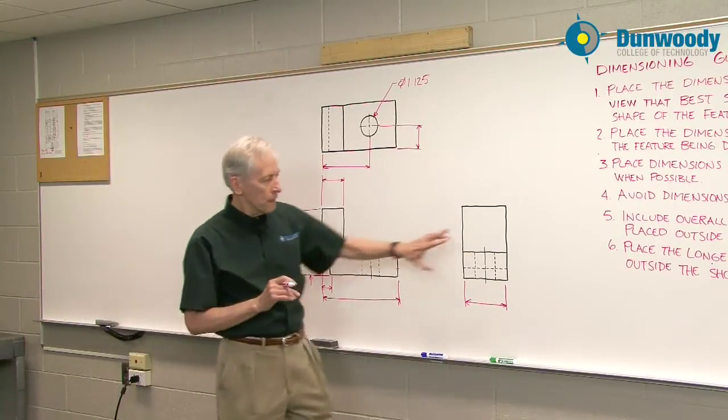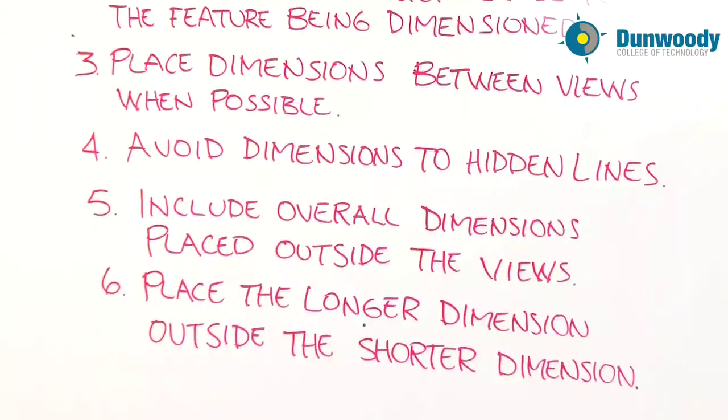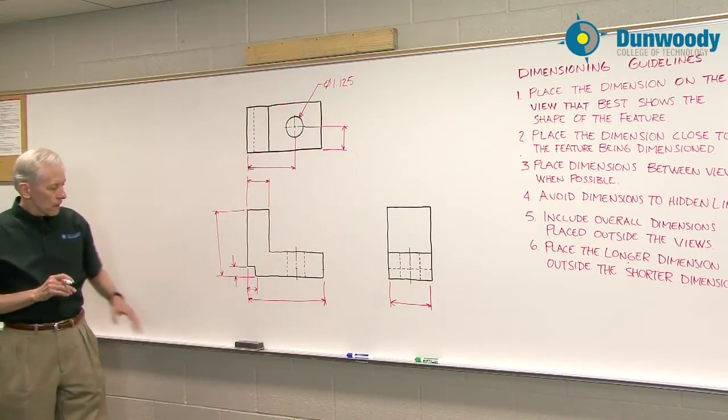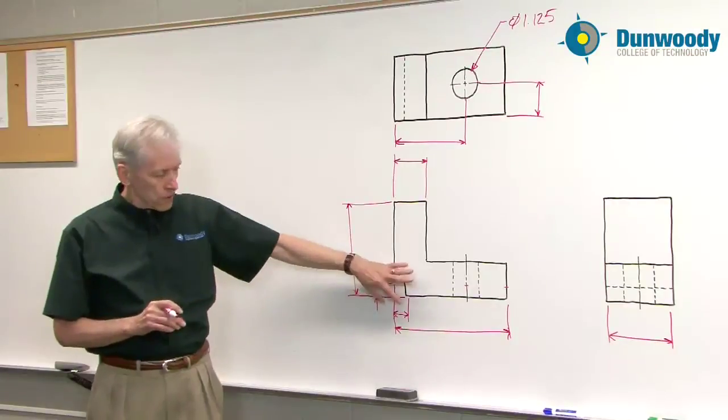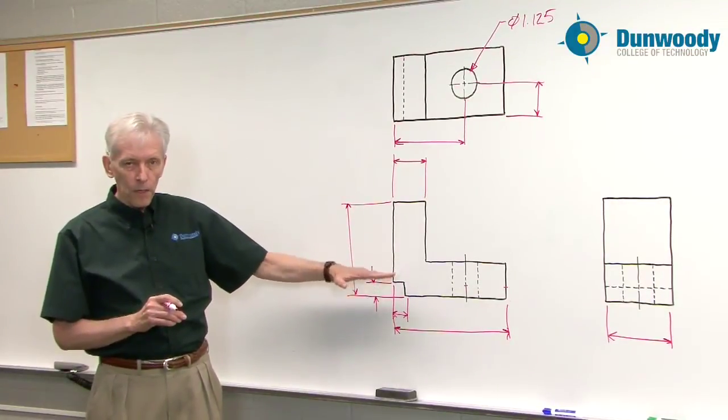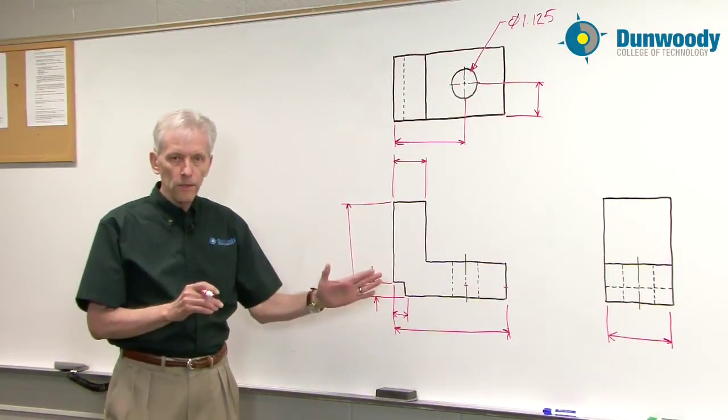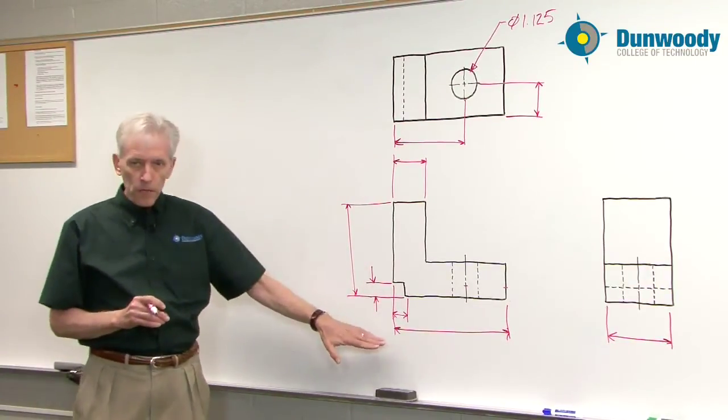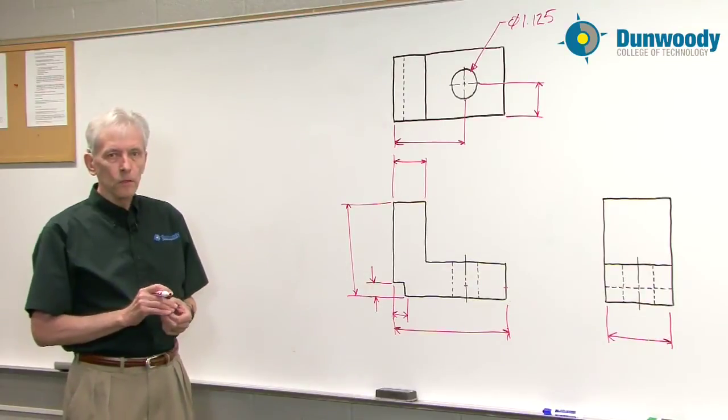So I have the three overall views. And I also applied number six, place the longer dimension outside the shorter dimension. So as you place dimensions on your drawings, the shortest dimension should be the closest to the part. And then as the dimensions increase in length, they move further out. And then the farthest out dimension would be the overall dimension.